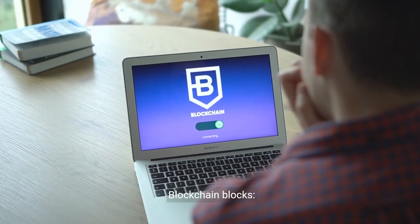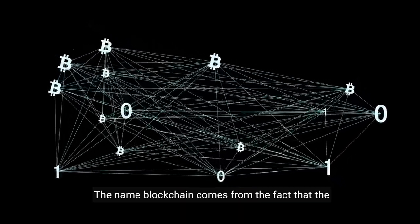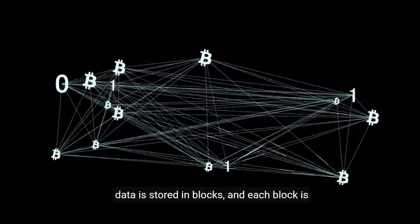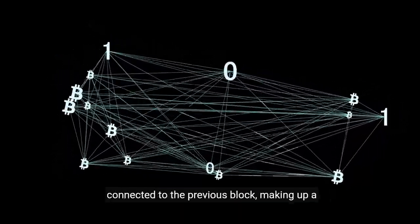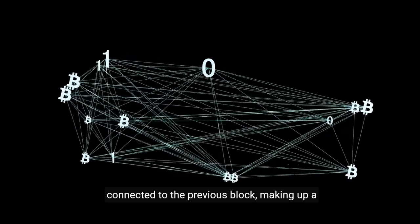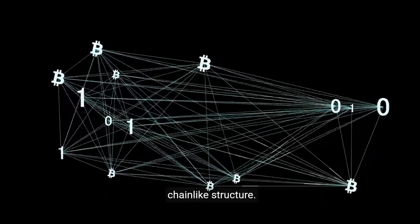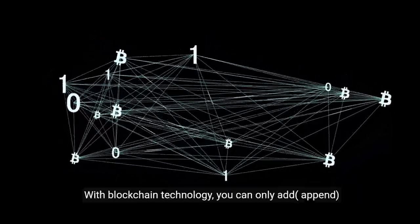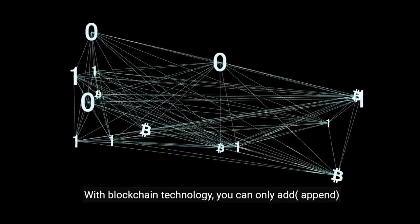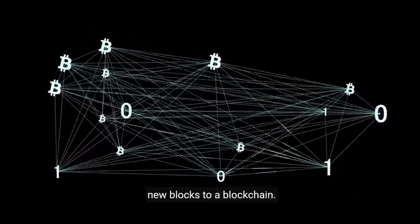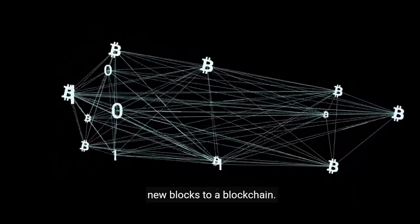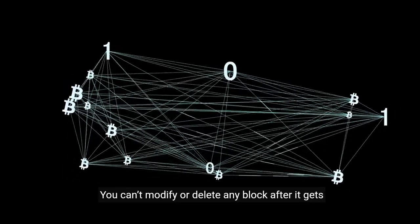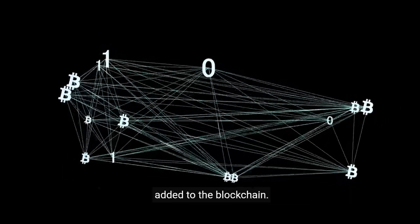Blockchain blocks: the name blockchain comes from the fact that the data is stored in blocks, and each block is connected to the previous block, making up a chain-like structure. With blockchain technology, you can only add or append new blocks to a blockchain. You can't modify or delete any block after it gets added to the blockchain.